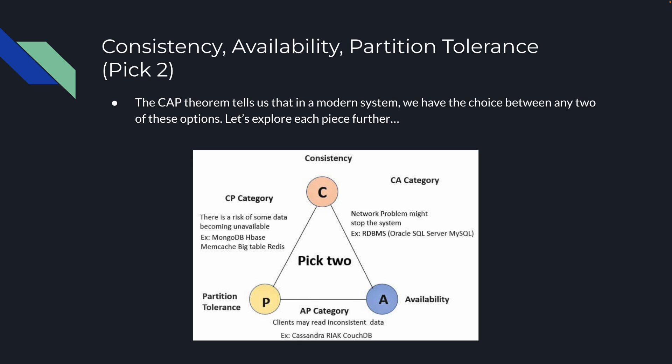So what is the CAP theorem? CAP stands for consistency, availability, and partition tolerance. The theorem tells us that in a modern system we have to choose between any two of these options — consistency and availability, availability and partition tolerance, partition tolerance and consistency, or whatever other combination you can make. So let's explore each one of these pieces individually.